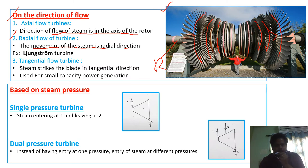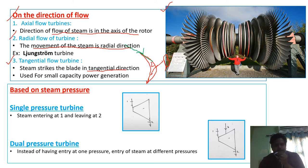The third type is a tangential flow turbine. In a tangential flow turbine, steam strikes the blade in the tangential direction. That is, steam hits the turbine blade tangentially, and this type of turbine is called a tangential flow turbine.